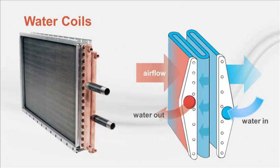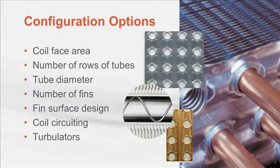Water coils are fin-tubed heat exchangers consisting of rows of tubes that pass through sheets of formed fins. They're used to transfer energy between two fluids — typically air flowing across the outer surfaces of the fins and tubes, and water flowing through the tubes. The construction of the coil impacts the rate of heat transfer as well as the resistance to air and water flow. With the wide range of airflows, water flows, and temperatures, there's a huge number of possible applications for a water coil.